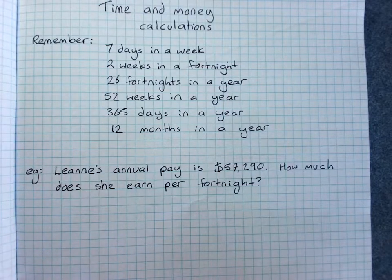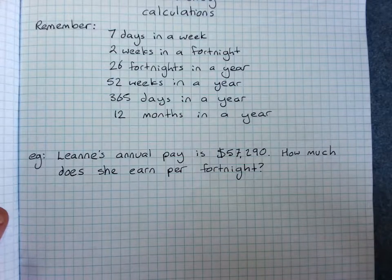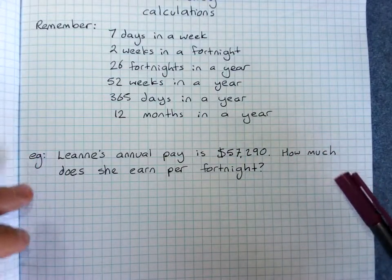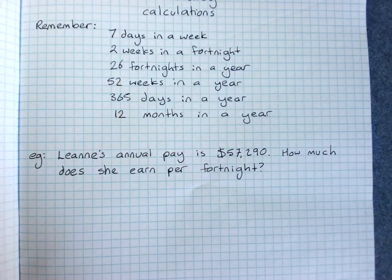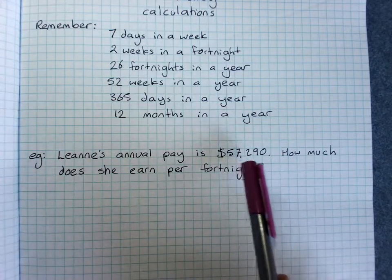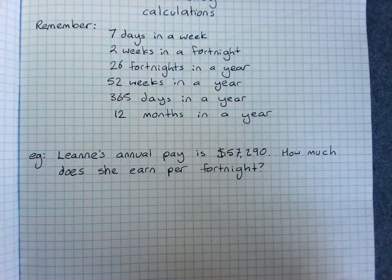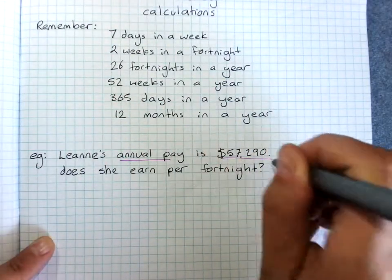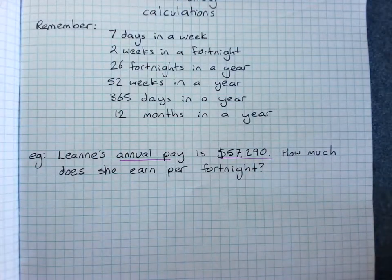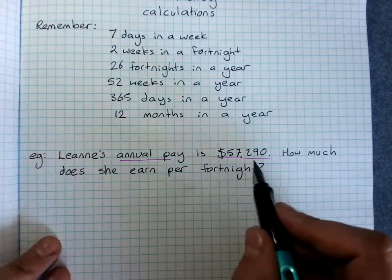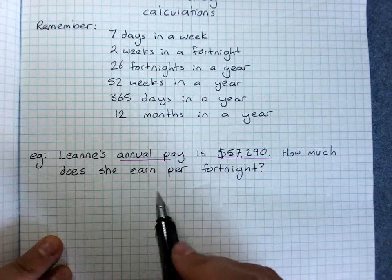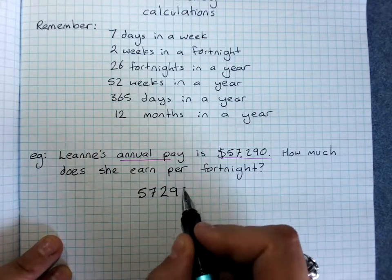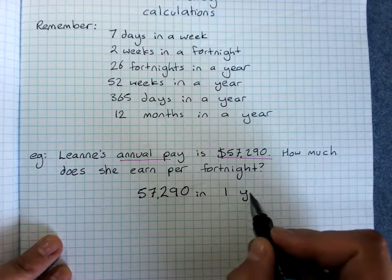With that information we can do all this type of finance calculation. It's a word question — in your workbook you wouldn't write out the word question, but because it's an example in your notes you do. Leanne's annual pay is $57,290. How much does she earn per fortnight? We start by writing down what we know: $57,290 in one year.